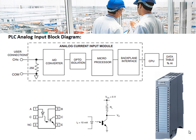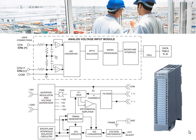A typical opto-transistor and diode are used for isolation purposes. This is the analog voltage input module, and it is of differential type. Differential type input is preferred over single-ended because it is less sensitive to noise and ground currents. The signal is fed to the ADC, and through opto-isolation it is fed to the microprocessor and then to the CPU of the PLC.